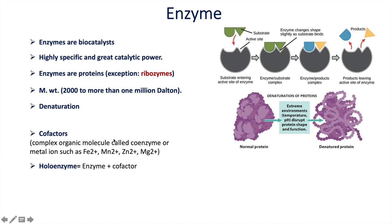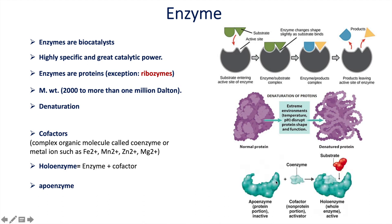The combination of an enzyme and cofactors is called a holoenzyme. Apoenzyme is the inactive form of the enzyme — the protein portion that requires cofactors to become activated. Apoenzyme binds with a coenzyme to become the activated form, the holoenzyme, and then the substrate binds and is converted into product.